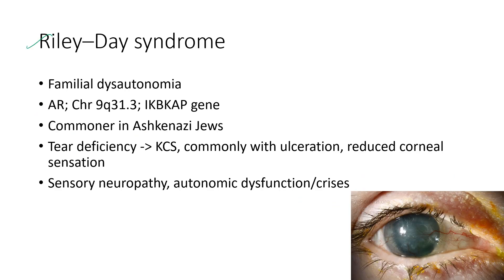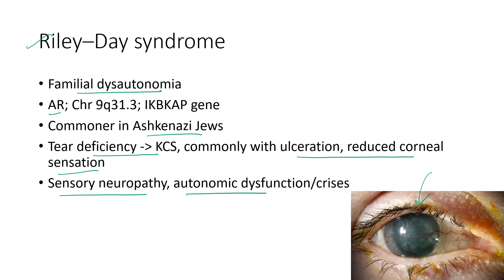Next is Riley-Day syndrome, also known as familial dysautonomia. It is an autosomal recessive condition commoner in Ashkenazi Jews. There will be tear deficiency leading to keratoconjunctivitis sicca, corneal ulceration, and reduced corneal sensation. The systemic features include sensory neuropathy and autonomic dysfunction or crisis.